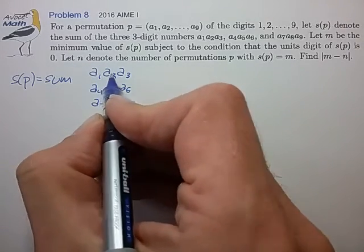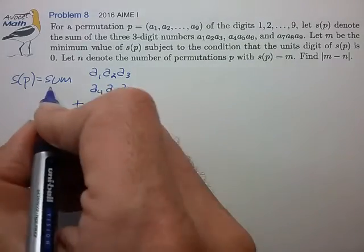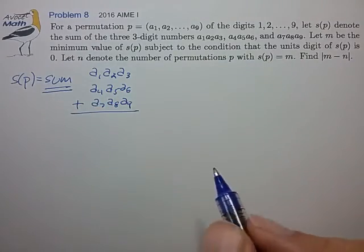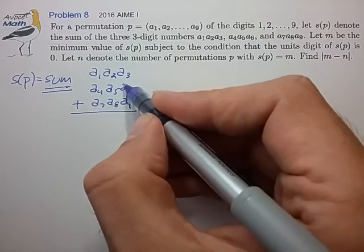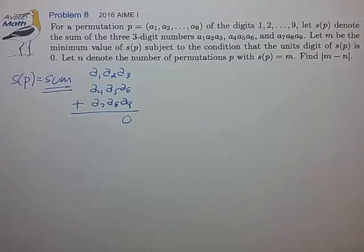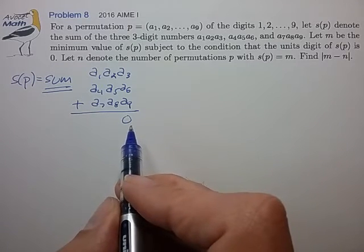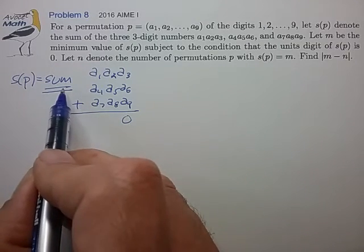So we have hundreds place, tens place, units digit. We're going to add all these up to generate this sum, subject to the condition that the units digits will add up to 0 in some way. Okay, so I think I understand this a little better, and it looks like if we're going to try to minimize this sum...